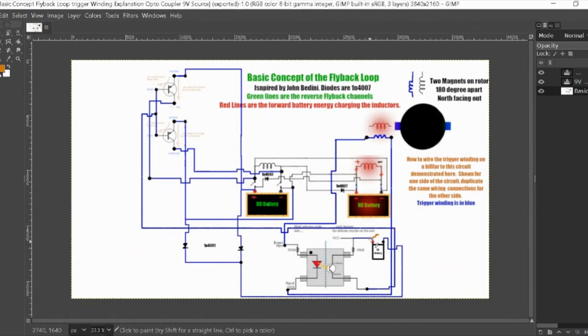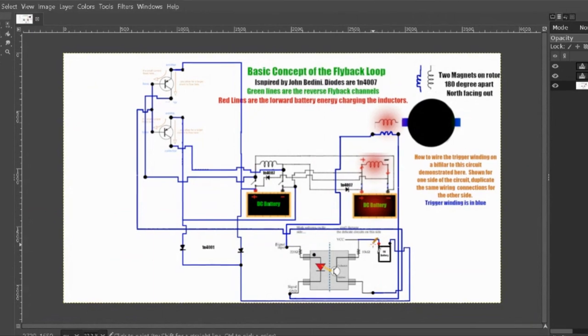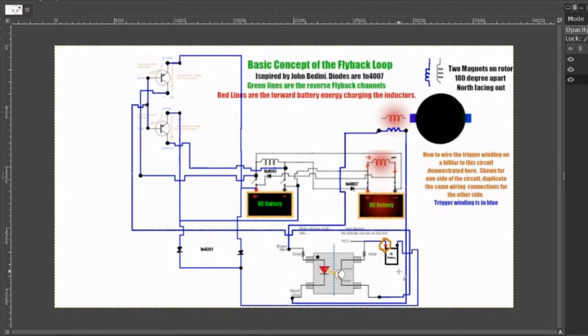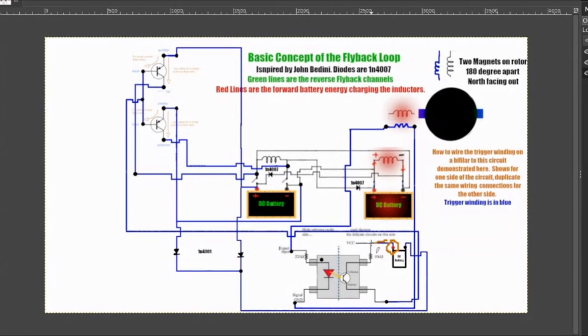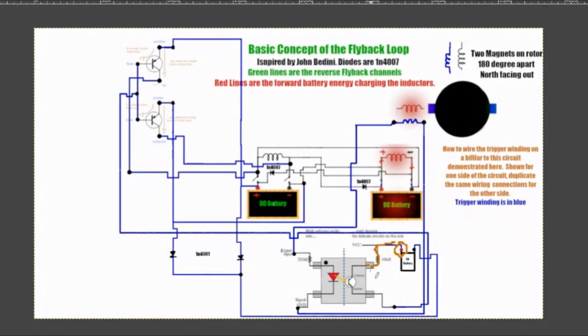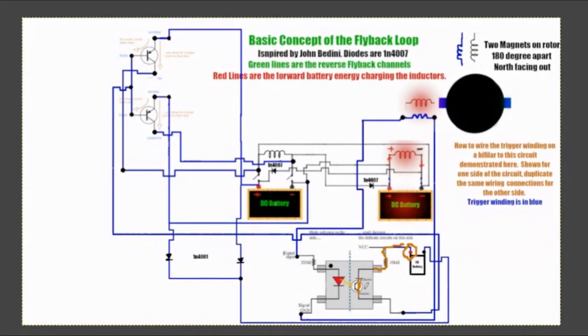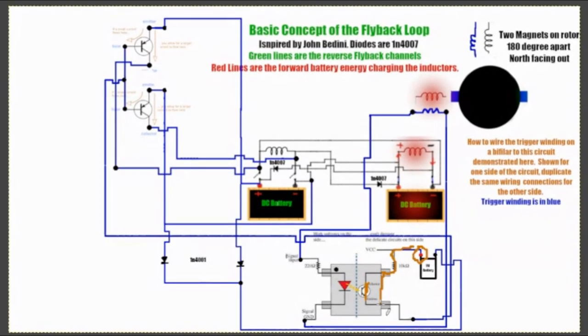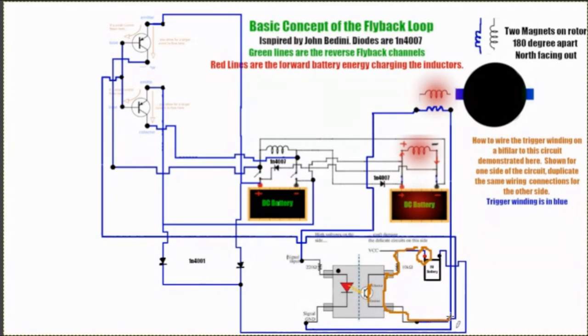Okay, so you have a 9-volt battery here. Your source plus is going to channel when this gate closes on the optocoupler. It's going to channel through here, it's going to go up this way.